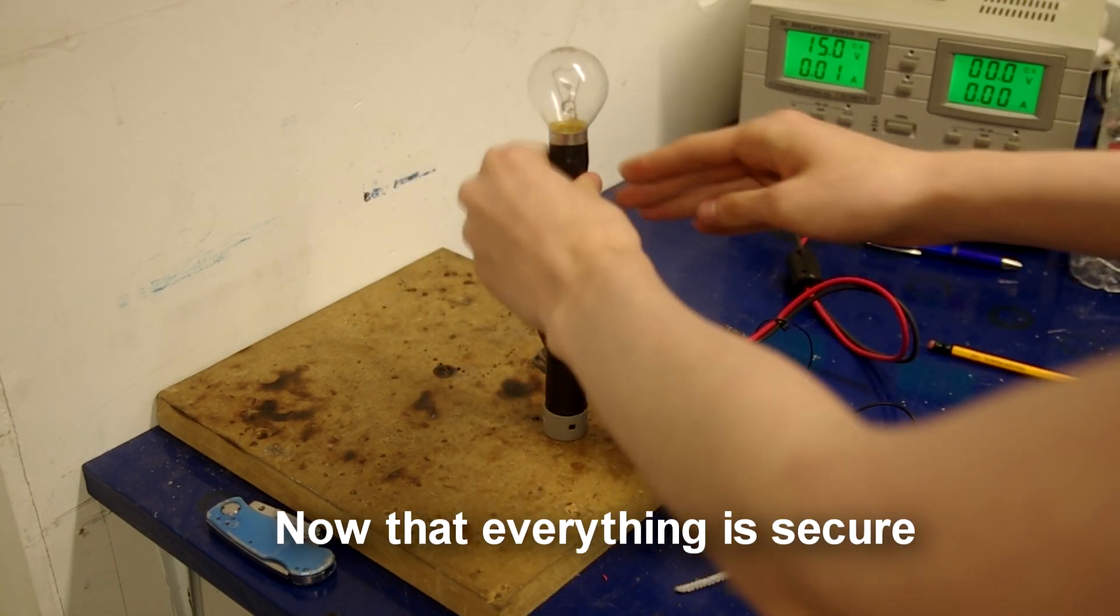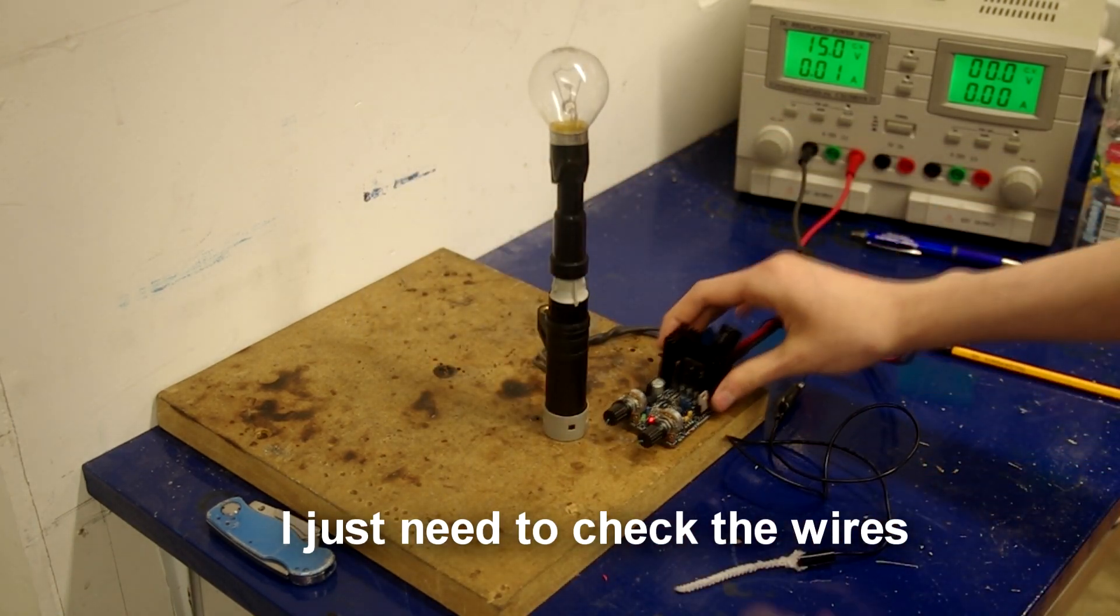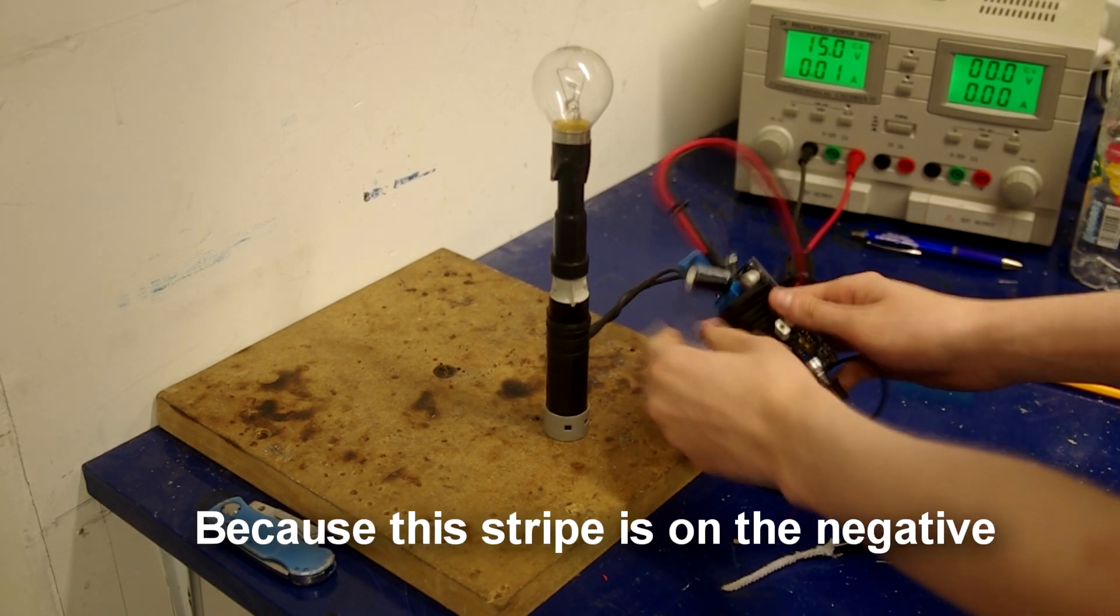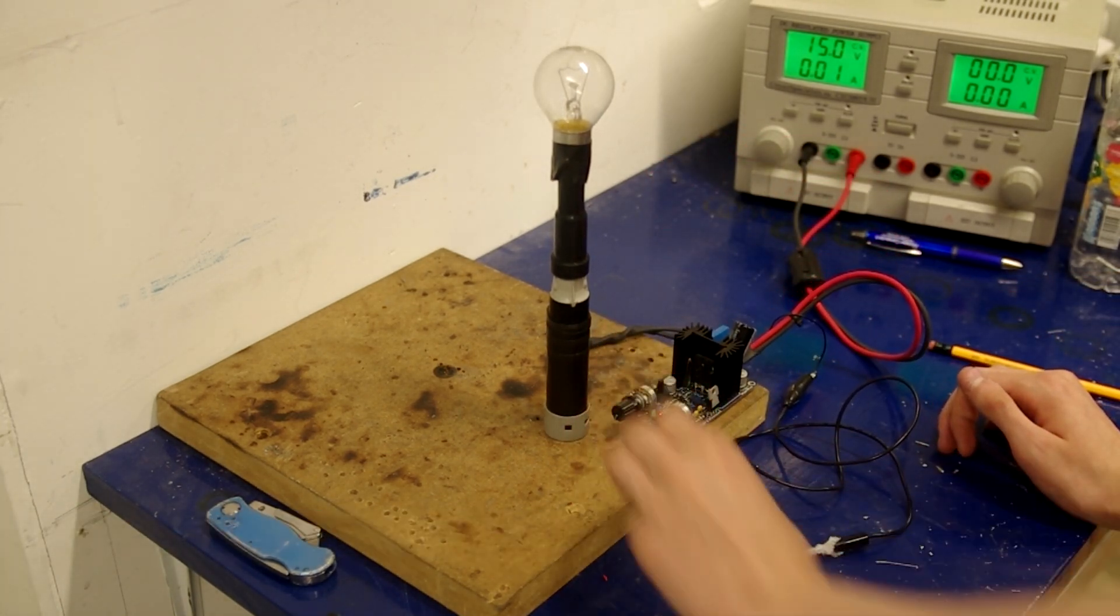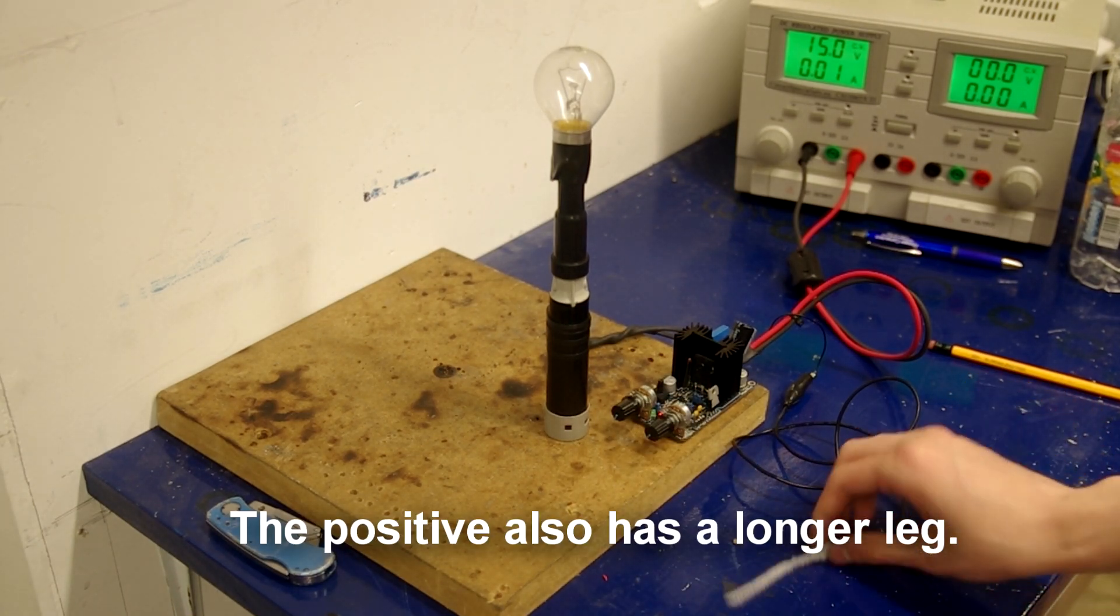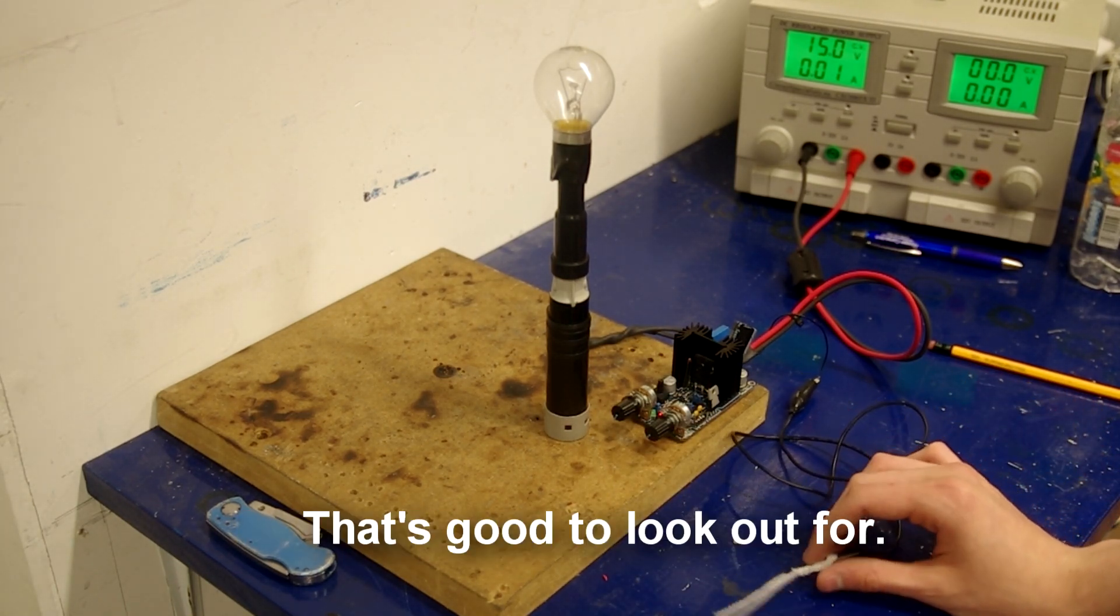Now that everything is secure I just need to check the wires. So I know this capacitor is in the right way around because the stripe is on the negative and that's what that's connected to. The positive also has a longer leg. That's good to look out for.